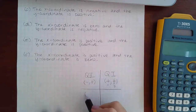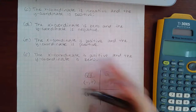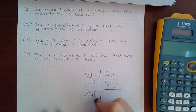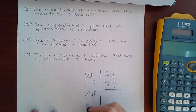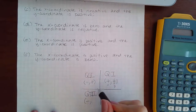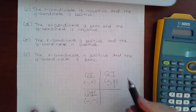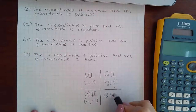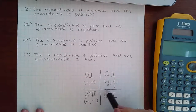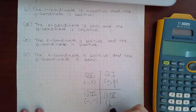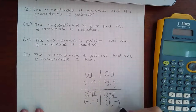Then this is quadrant 3. From the center of the origin, I'm going to the left, so the x value is negative, and I'm also going down, so the y value is also negative. And last but not least, this is quadrant 4. From the origin, it goes to the right, so the x value is positive, but it goes down, so the y value is negative.